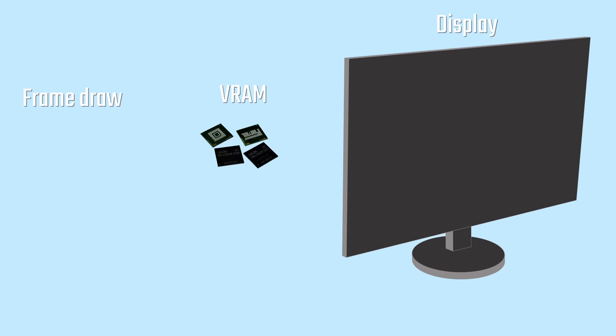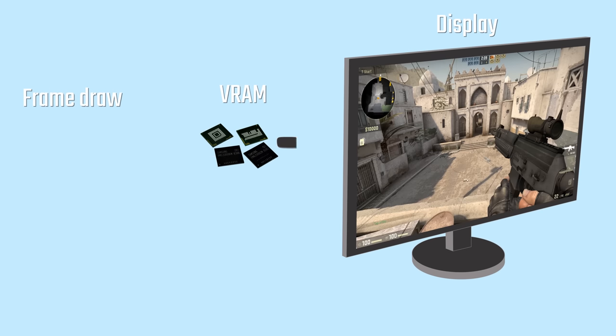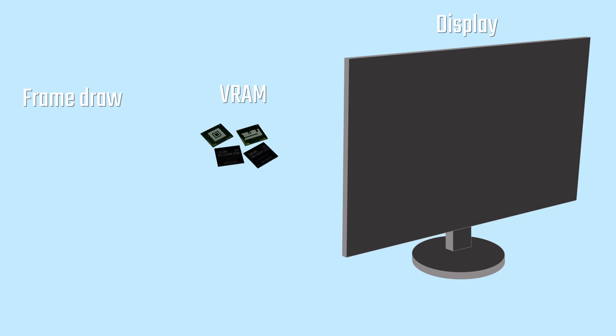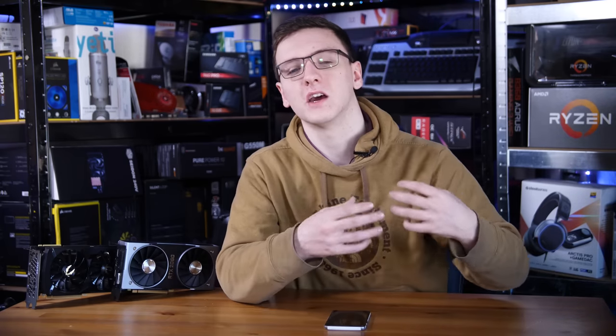So looking at the VRAM then, what is it used for? It's often referred to as the frame buffer and acts as just that. It is the place where partially and fully rendered frames sit and are copied from to then be sent to your display. It's also used to store textures from games and a load of other stuff, so when you're doing any graphics-heavy processing — video games, video editing, and AI acceleration these days — the VRAM is what's used to supply your GPU with data.